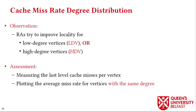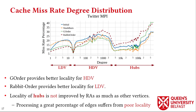In comparing reordering algorithms, we observe that they try to improve locality of either low-degree or high-degree vertices. To assess that, we measured the last-level cache misses for each vertex and plotted the average miss rate for vertices of the same degree. This gives us plots where the x-axis is degree and the y-axis is average miss rate, showing how miss rate of reordering algorithms varies for different degrees.